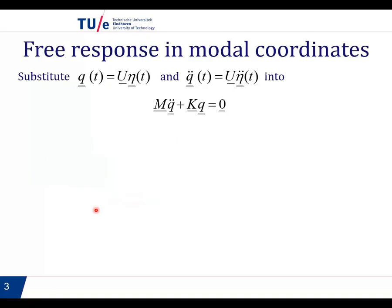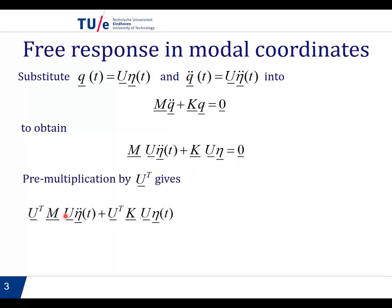The interesting thing to think about is what the consequence of modal superposition is for our equations of motion. If we take q is U times eta, and then q double dot is U times eta double dot, and we substitute them into the equations of motion, we find the following. This expression here, we can pre-multiply it with U transpose.